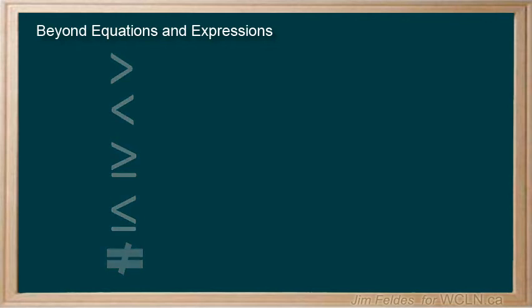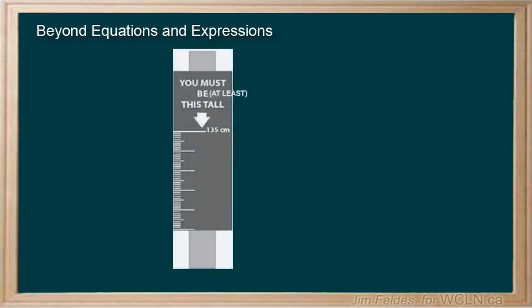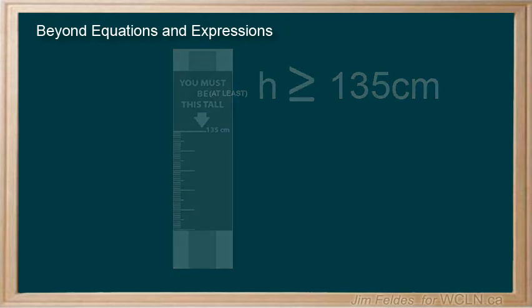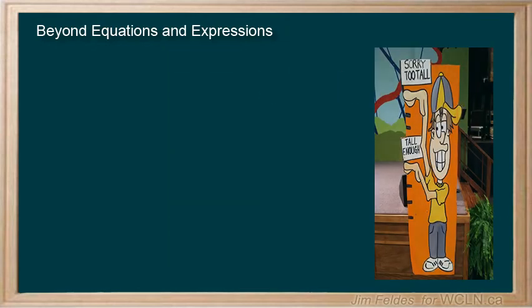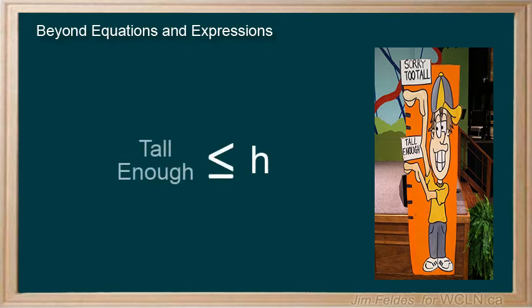This is like when you need to be a certain height to go on a ride. Your height must be at least 135 centimeters, which means equal to or greater than, or not too small or too tall. H is greater than or equal to, tall enough, but less than or equal to, too tall.